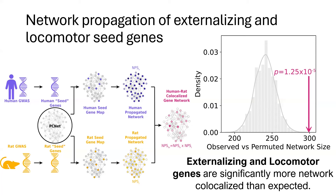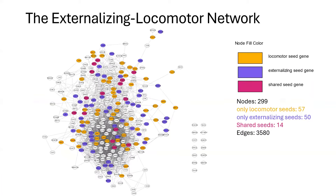So the externalizing and locomotor genes identify a co-localized network that is significantly larger than expected by chance. The network has about 300 genes in it — roughly 50 from each of the different datasets, and 14 of those genes are shared.